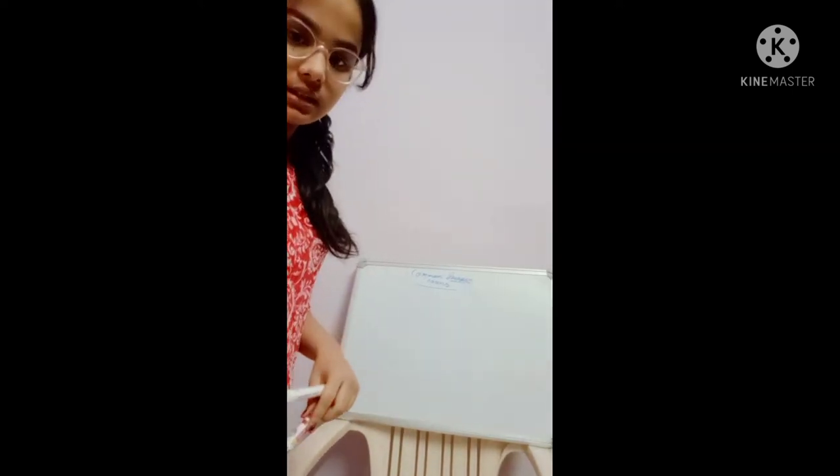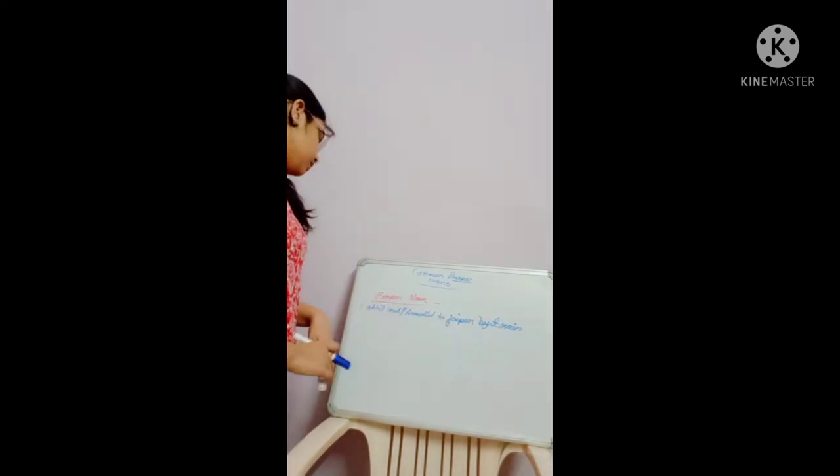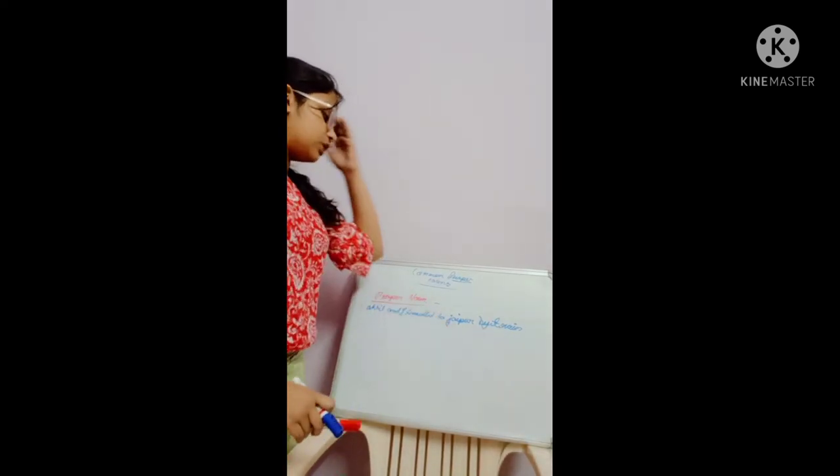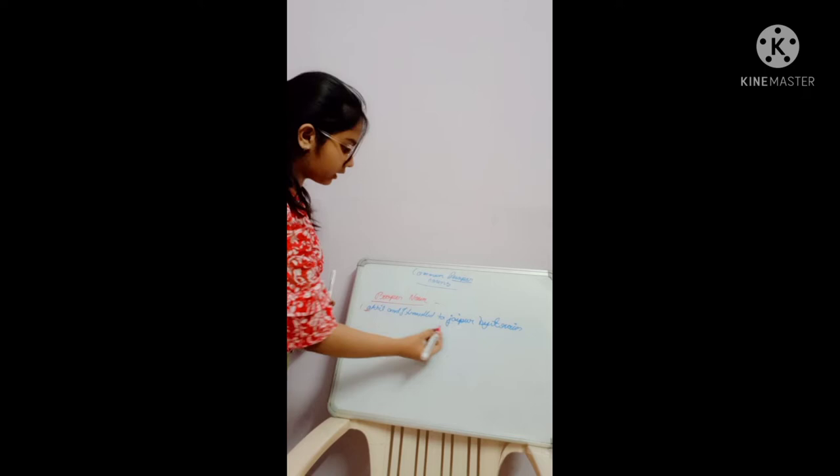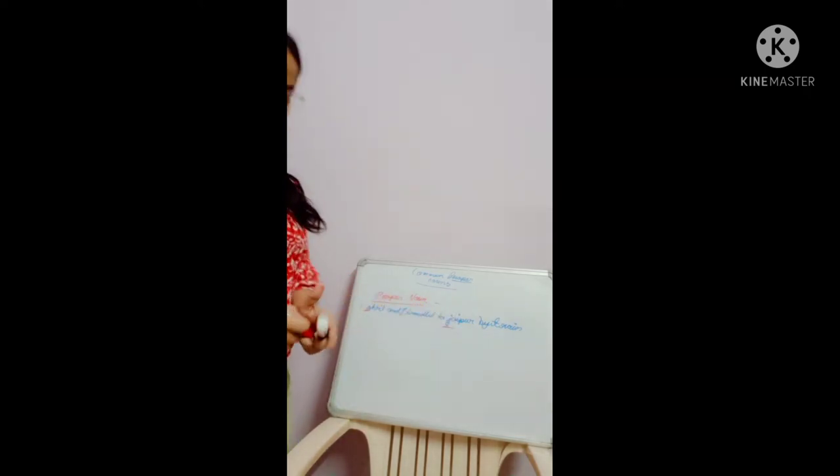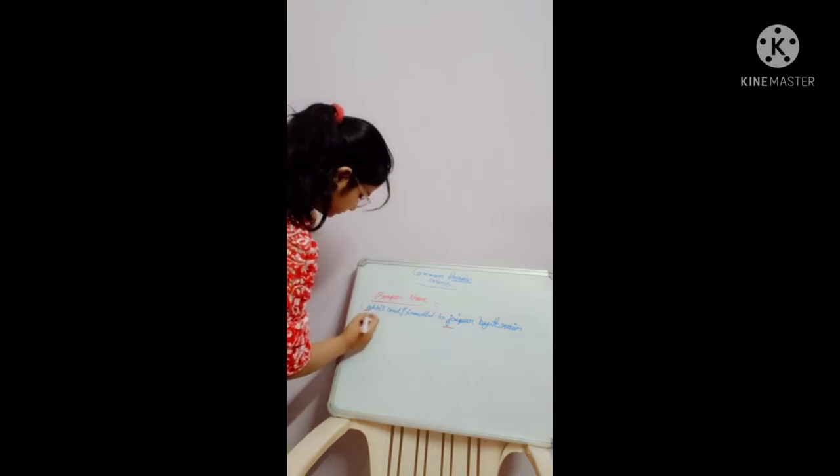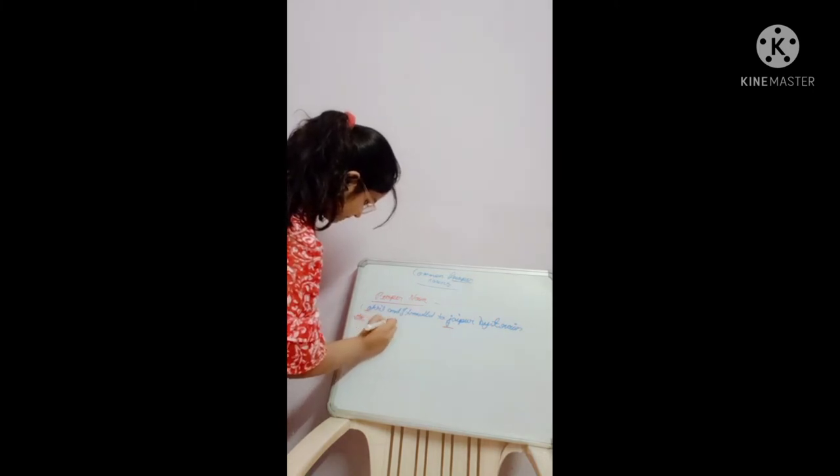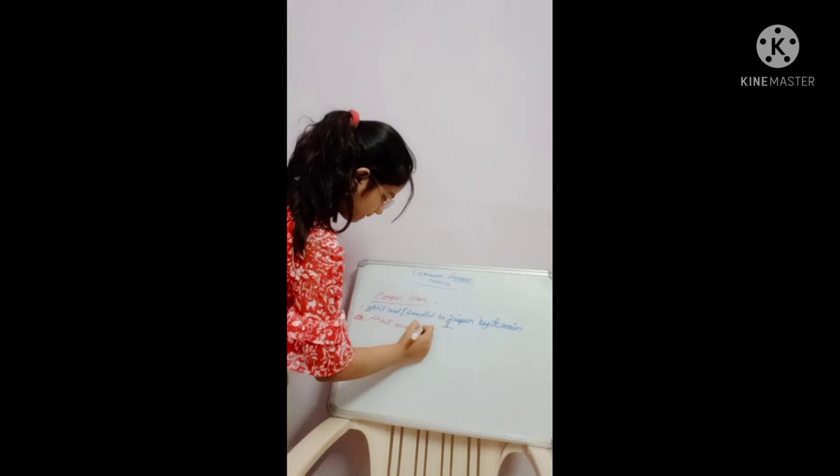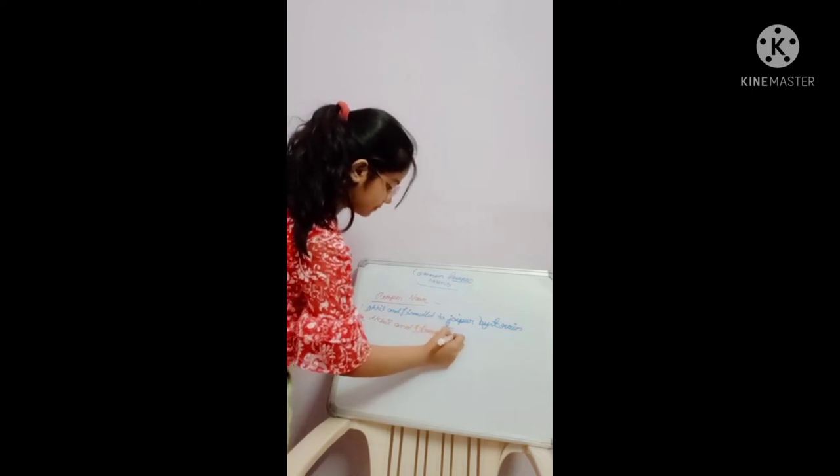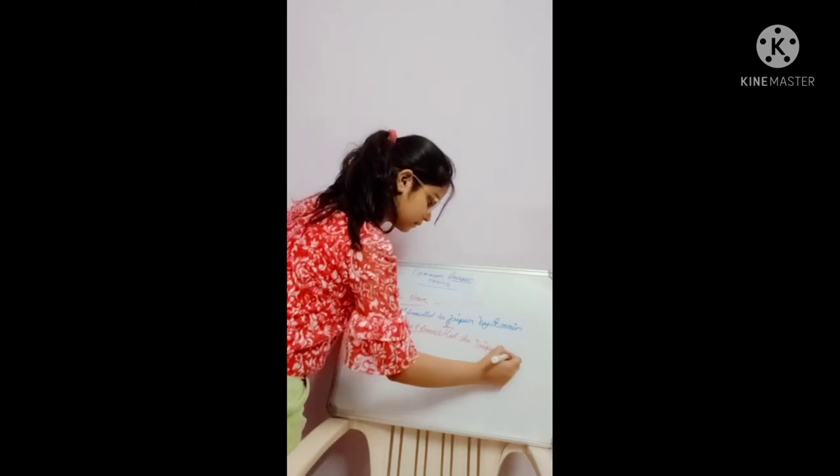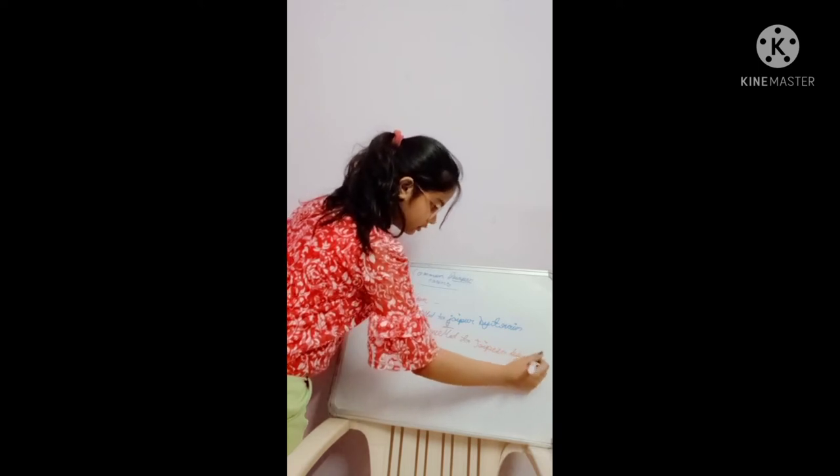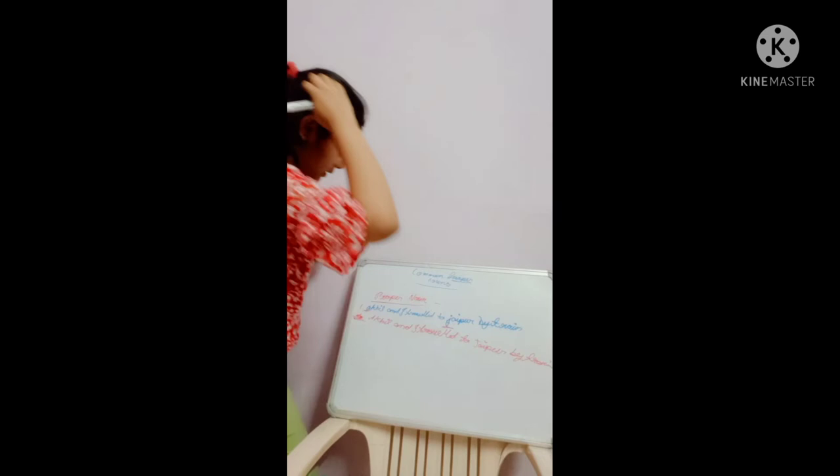Now let's take some examples in the sentence. There is the first example of proper noun. Akhil and I travel to Jaipur by train. In this, A of Akhil and J of Jaipur is small. So we will correct it here. Akhil and I travelled to Jaipur by train.